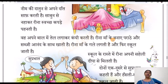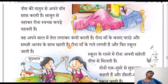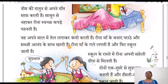'Rina maa ke banai parathe aur sabji anand ke saath khati hai' — Rina is eating aloo ka paratha and vegetables, whatever her mama is making, and she is eating very happily. Now tell me, are you eating happily what your mama is preparing, or saying 'I want this, I want that'? Don't make excuses — whatever mama prepares, you should eat because it is healthy for you. That's why mama prepares your breakfast and lunch.